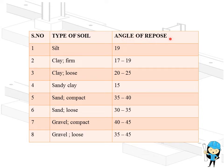So for silt soil, it is 19. For clay firm, firm is the next stage of fully compacted clay soil, for that it is 17 to 19. For clay loose soil, it is 20 to 25. And sandy clay soil, it is 15. Next is sand.